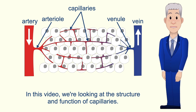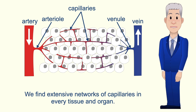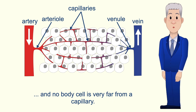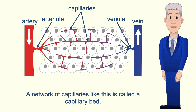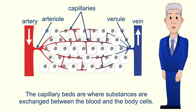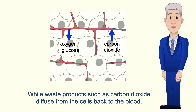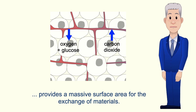In this video we're looking at the structure and function of capillaries. We find extensive networks of capillaries in every tissue and organ. As you can see, capillaries are extensively branched and no body cell is very far from a capillary. A network of capillaries like this is called a capillary bed. The capillary beds are where substances are exchanged between the blood and the body cells — for example, oxygen and glucose diffuse from the blood to the body cells, while waste products such as carbon dioxide diffuse from the cells back to the blood. The extensive branching of capillaries provides a massive surface area for the exchange of materials.